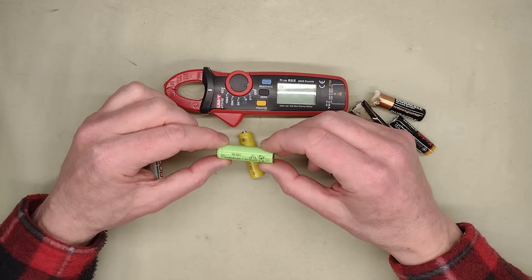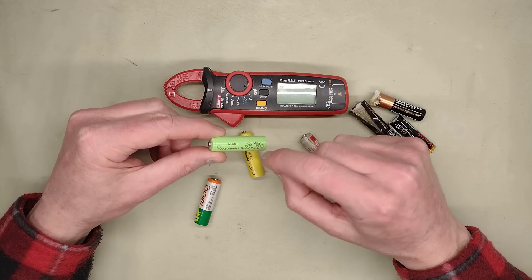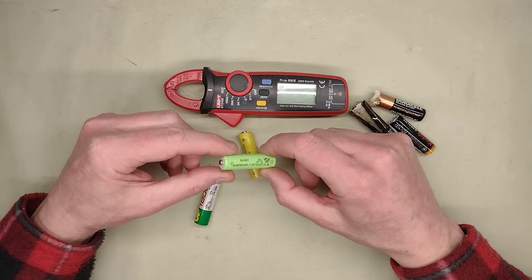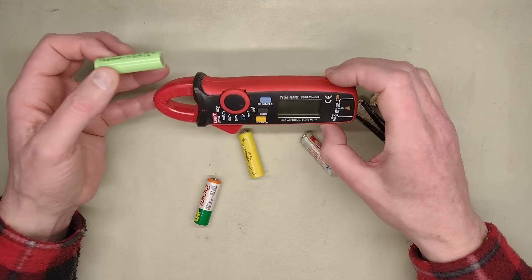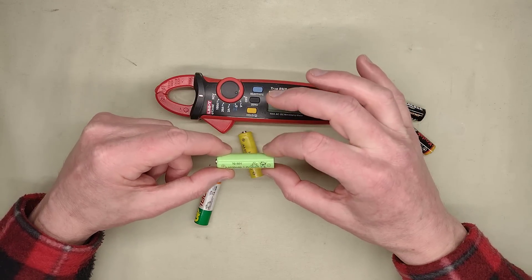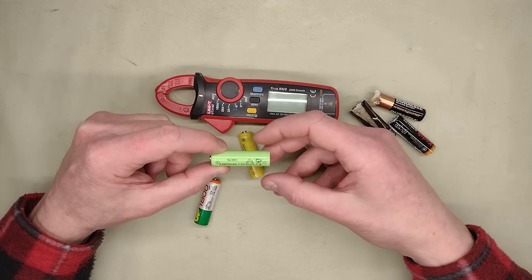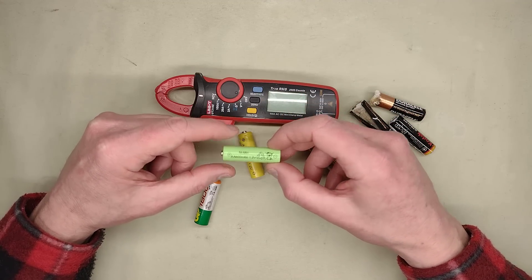But I would say that a good step these days is to use the modern nickel metal hydride cells. Even for applications like this, it's not going to be a very high current draw. You could use the low capacity ones that are quite cheap, but the ones that specifically say low self-discharge or ready to use, precharged.